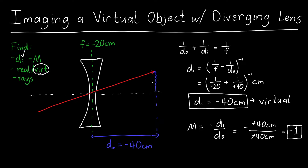A virtual object means that if this lens weren't here, the rays would converge to that location. So my second favorite ray goes straight into the lens — without the lens it would go straight to the object. But with the lens, it gets bent more steeply because the focal length is half as short, making it roughly twice as steep.